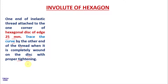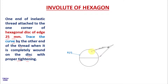First of all, let's make the hexagon. To make the hexagon, first make a circle of 25 mm radius, then make a diameter line. Open your compass equivalent to the radius of the circle and mark arcs on both sides. Put your compass on each arc point and mark further arcs with radius 25 mm. Join these arcs to complete the hexagon of 25 mm edge.